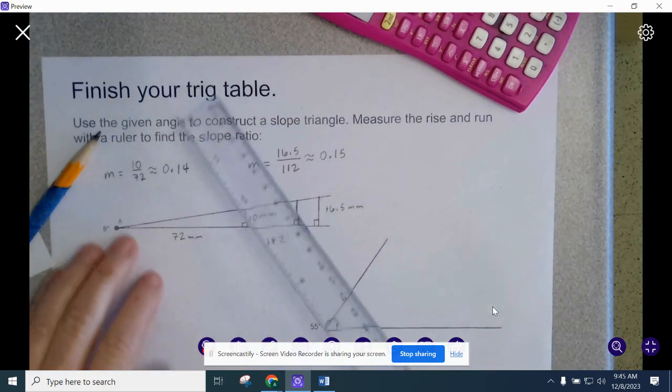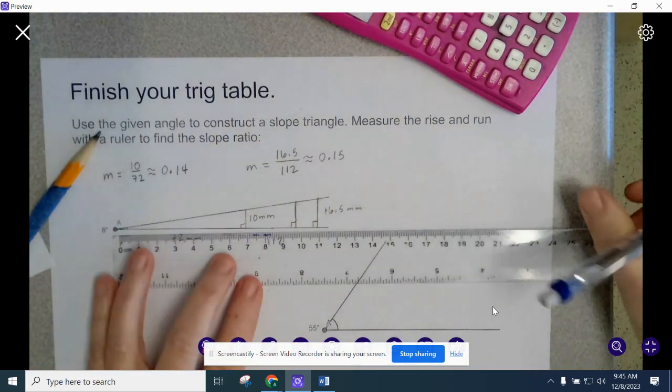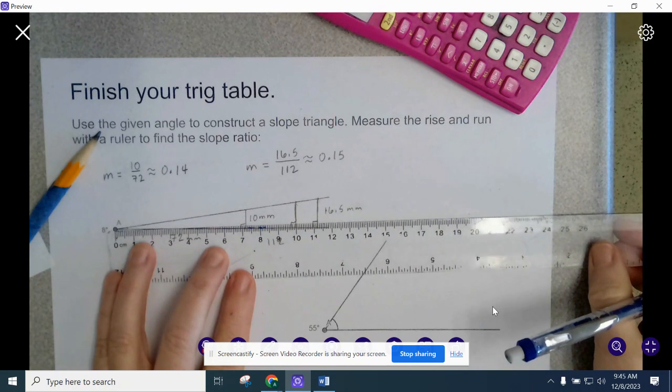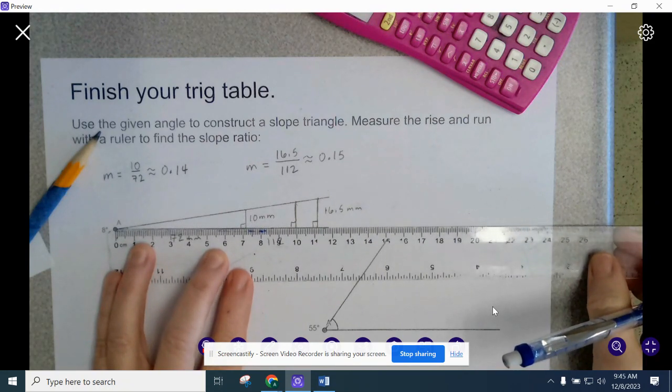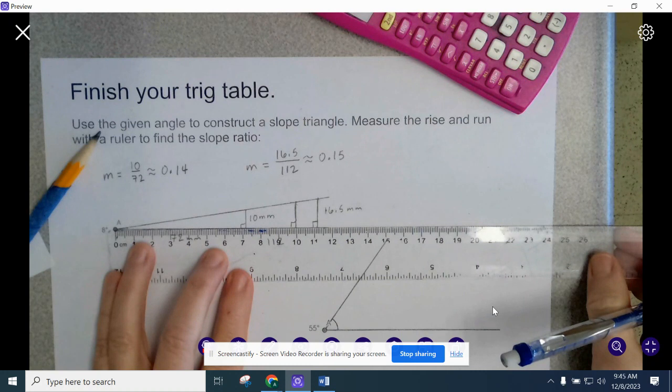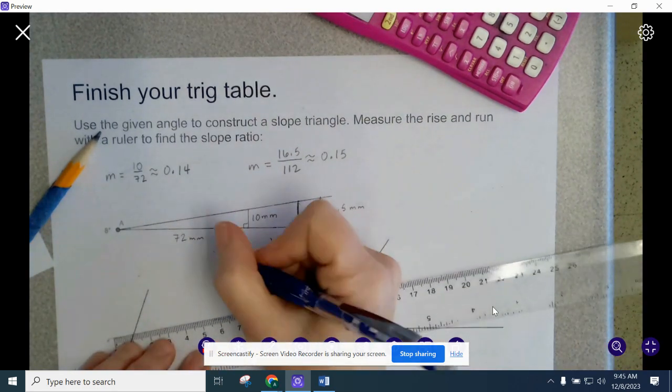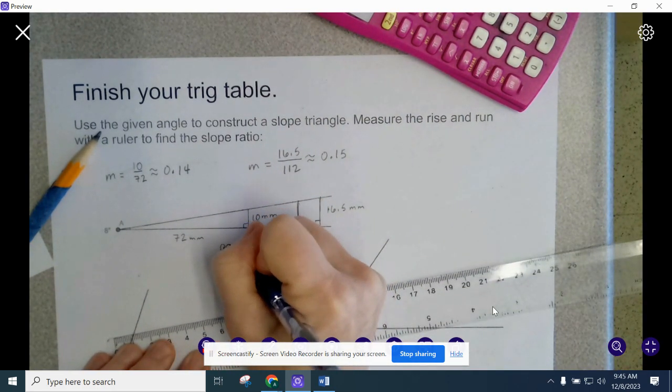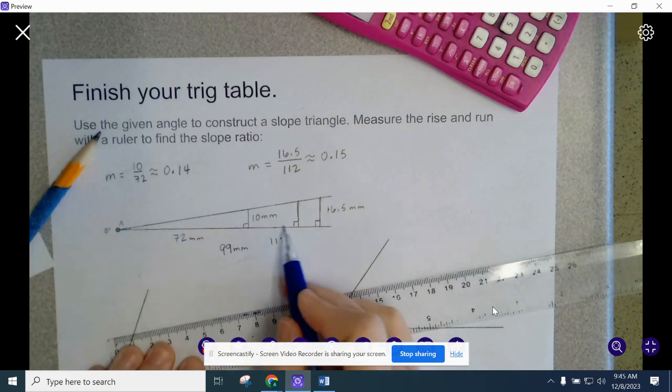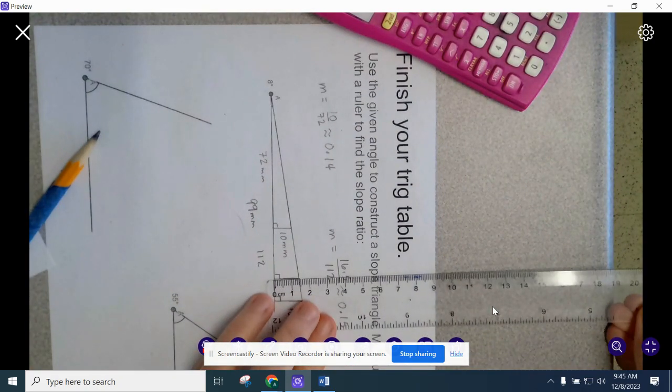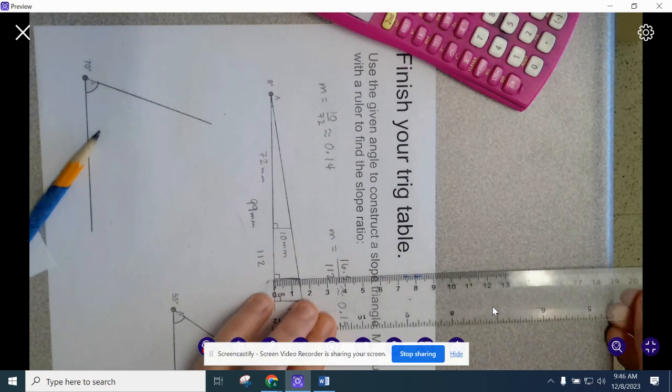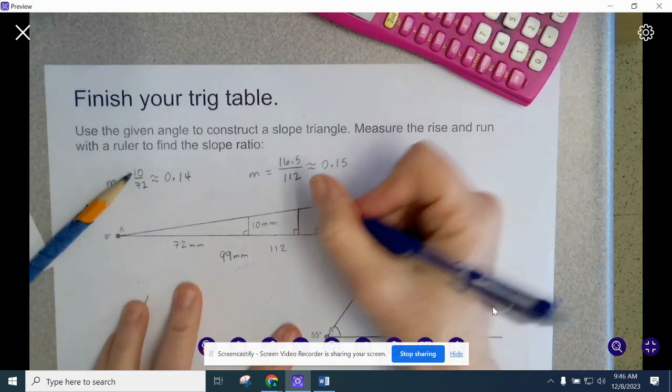So drop in my right angle. Measure my rise and my run. So I'll measure my run in the middle of that point A up to here. That looks like, I would say, about 99, 9.9 or 99. So now I have 99 millimeters for my run and my rise. Measure that. It looks like it's 14 or 1.4, 14 millimeters. This one is 14.